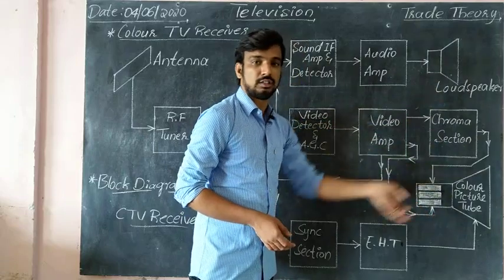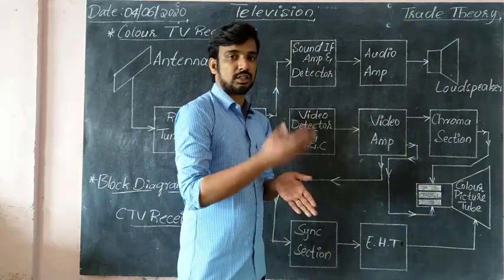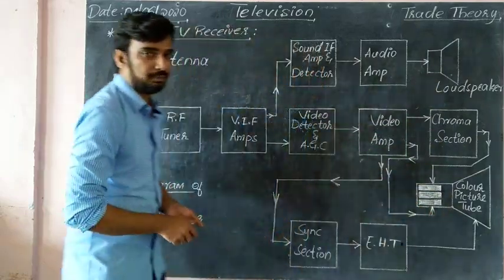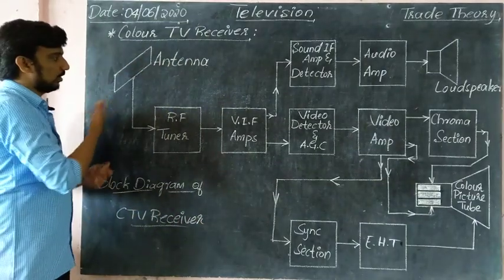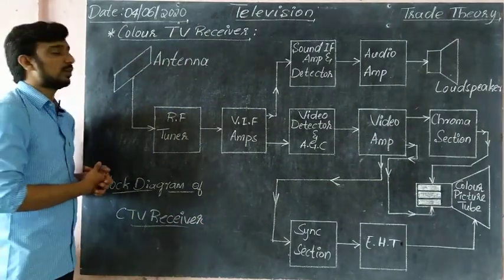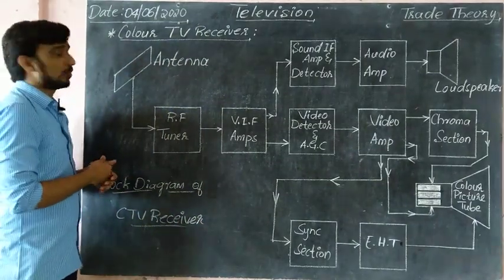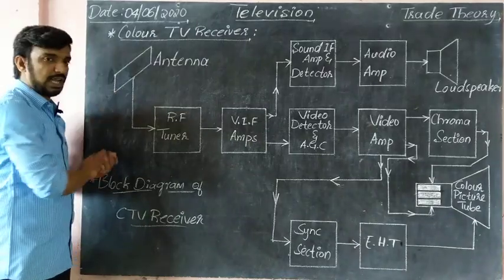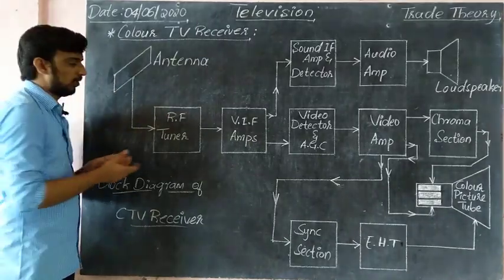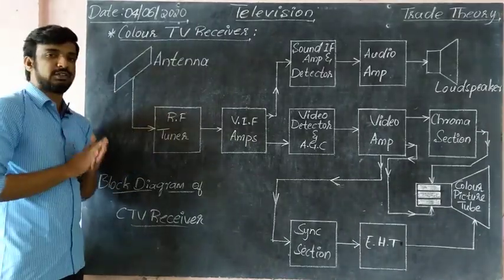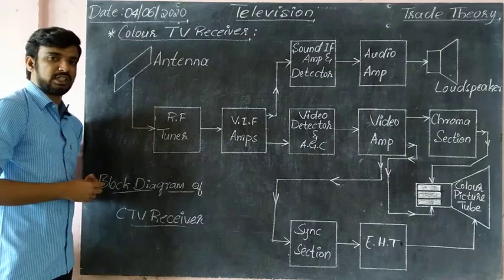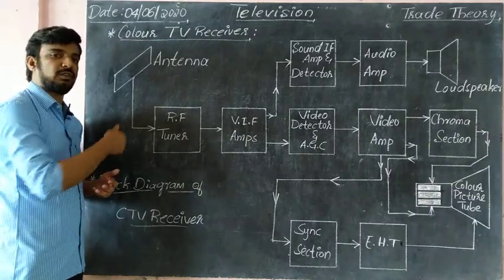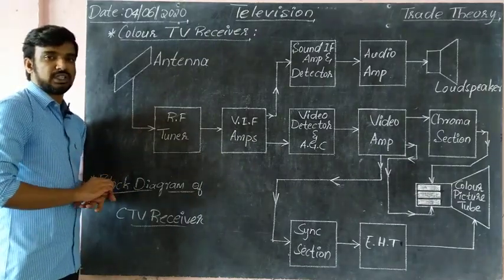Sound is produced through the loudspeaker, and the color picture is produced at the color picture tube. The antenna receives the signal. The RF tuner — when we tune it, we need to select that signal and then convert it to the intermediate frequency.